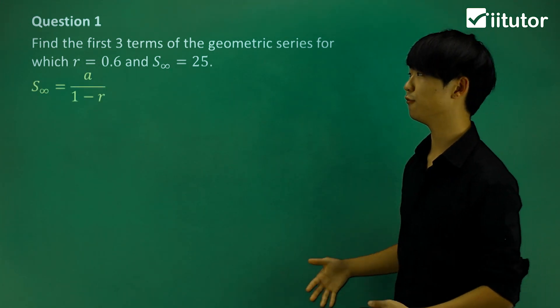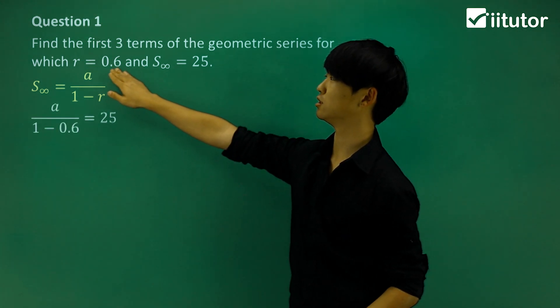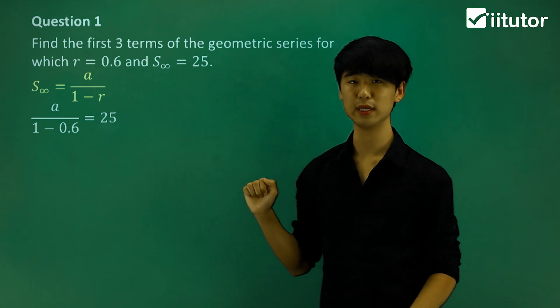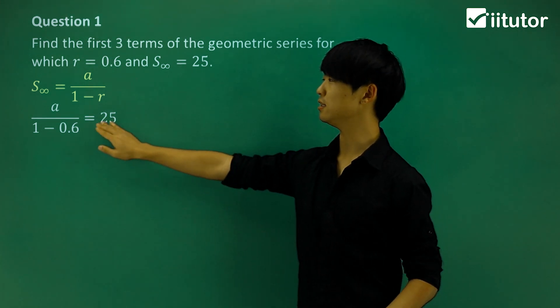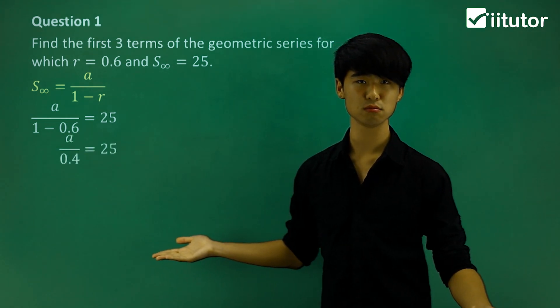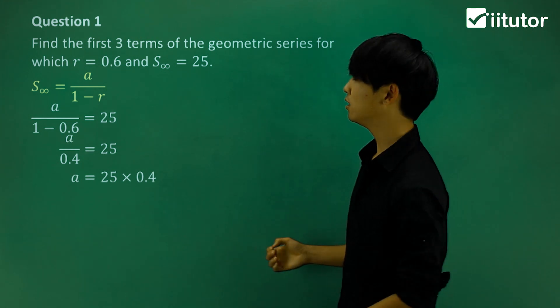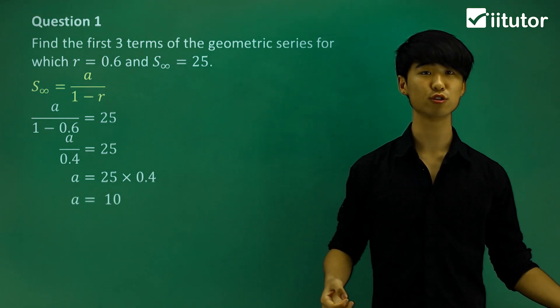This is the sum to infinity formula. I know that r equals 0.6 and the sum equals 25, so let's put those values in. From here we can see we have an unknown a. Let's find it. Simplify down, multiply 0.4 over, calculate 25 multiplied by 0.4, and we get a equals 10.